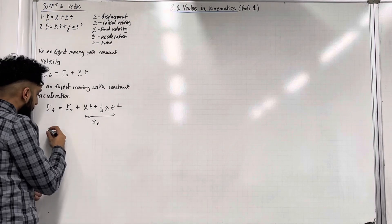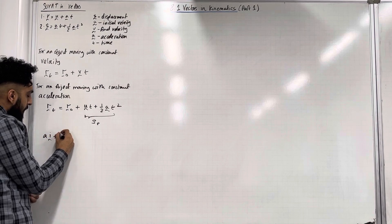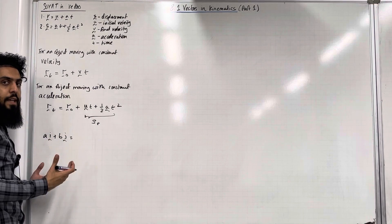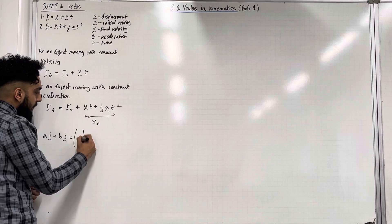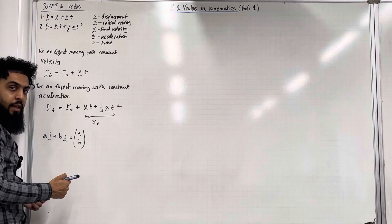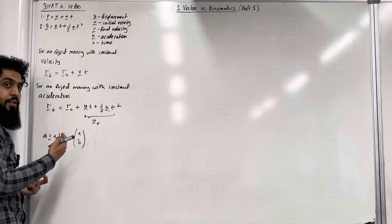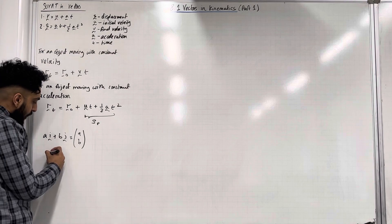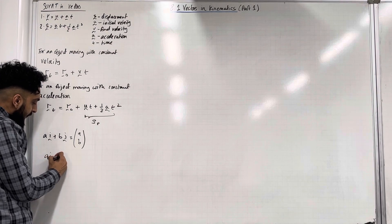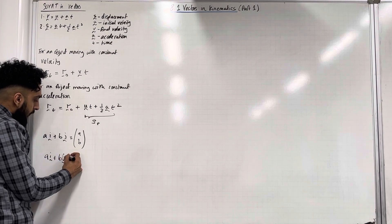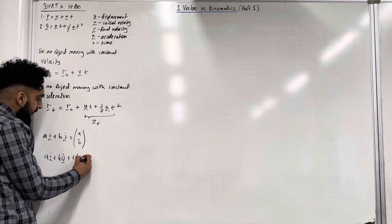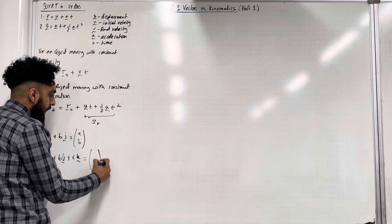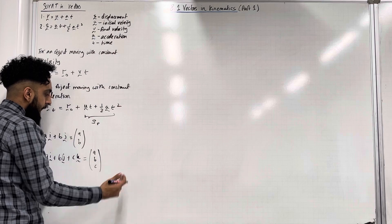A vector Ai + Bj can be written as a column vector for simplicity — just write (A, B). This is a vector in two dimensions. Extending this to three dimensions: a vector Ai + Bj + Ck can be written as the column vector (A, B, C).